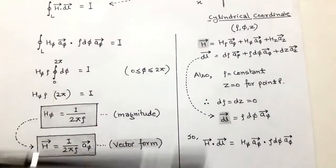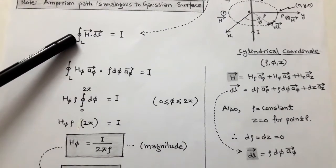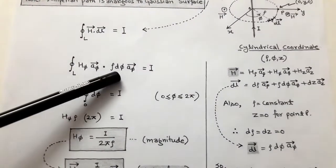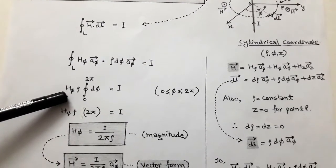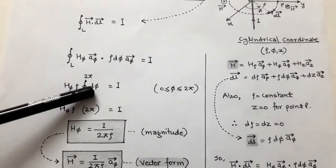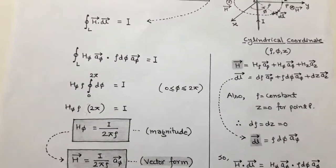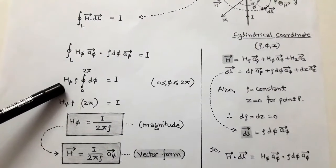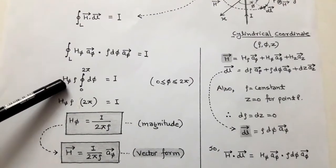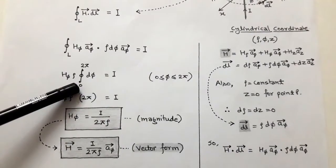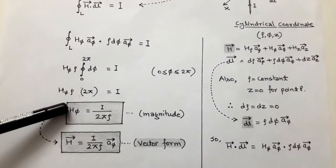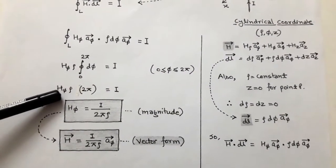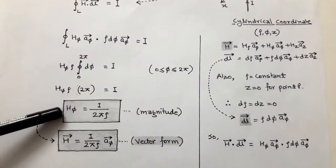After taking the dot product of H vector and dL vector, we get only the phi component. Substituting into Ampere's circuit law: H_phi unit vector phi dot rho d_phi unit vector phi. The dot product of unit vector phi with unit vector phi is 1, so we get H_phi rho d_phi. Since H_phi and rho are constant, they come outside the integration, and we integrate d_phi from 0 to 2 pi — because phi sweeps from 0 to 2 pi to make a closed path. The integration gives 2 pi, so H_phi equals I divided by 2 pi rho.